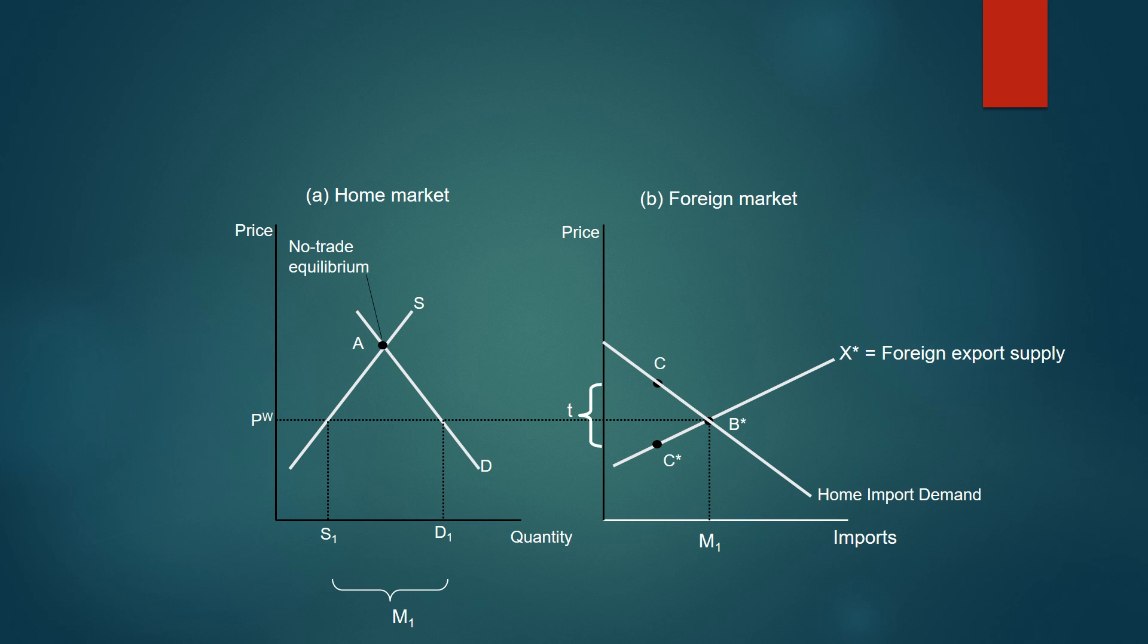Okay, so we have the same setup as before with the left-hand diagram representing the home market and the right-hand diagram representing the foreign market. The main difference here is that the foreign export supply curve is upward sloping. Why is this? The reason for this is that the price of exports from the foreign market will respond when the large country changes its import demand.